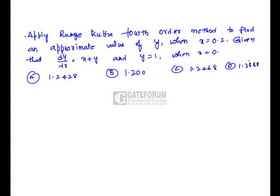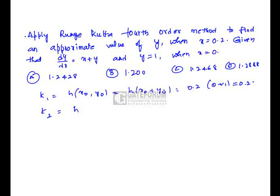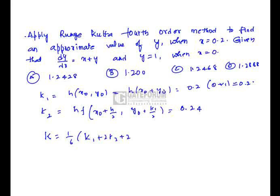Using the fourth-order Runge-Kutta method to find y when x = 0.2 for dy/dx = x + y, with x₀ = 0 and y₀ = 1. k₁ = h·f(x₀, y₀) = 0.2 · (0+1) = 0.2. k₂ = h·f(x₀ + h/2, y₀ + k₁/2) ≈ 0.24. Then k = (1/6)(k₁ + 2k₂ + 2k₃ + k₄) ≈ 0.2428, and y = 1 + 0.2428 = 1.2428, which is option A.